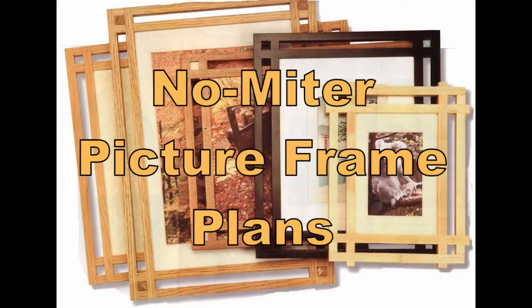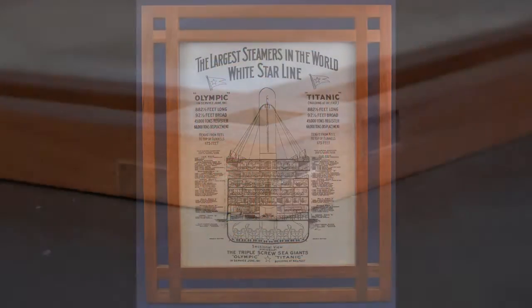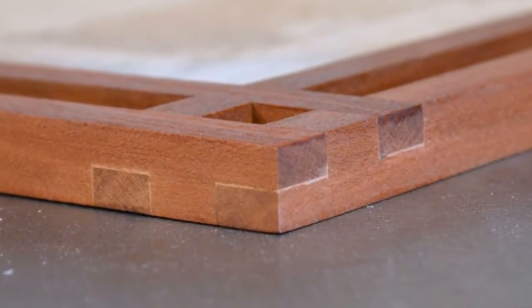A brand new update of the plans I published in Woodcraft Magazine, January 2007. The no-miter picture frame uses a double half-lap to form the corners.